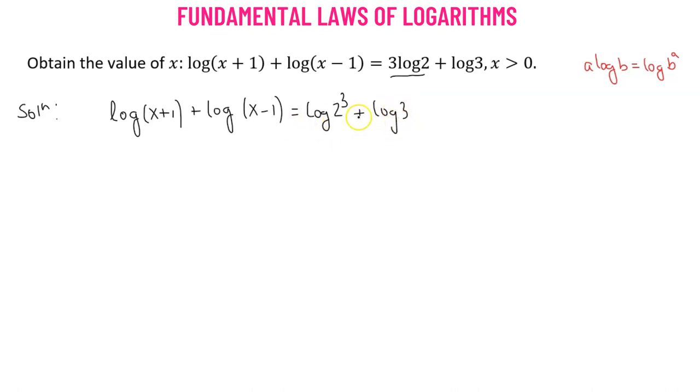The reason we're writing in this particular fashion is because now we can combine the two logarithms on both the left hand side as well as the right hand side using another property of logarithm. That is if we have log of a and that's added to log of b, that will be equals to log of a times b.